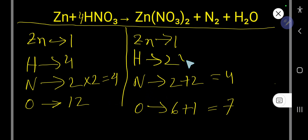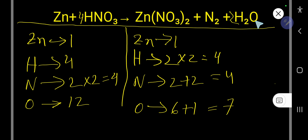Now let us balance hydrogen. We have 4 hydrogen here. This coefficient must come before the water molecule, giving 4 hydrogen and 2 oxygen.